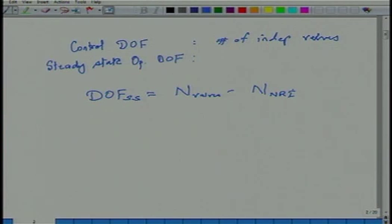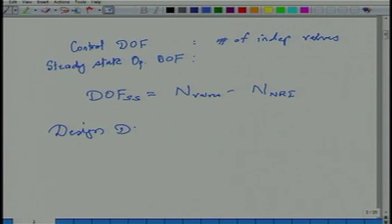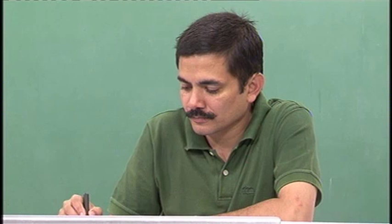This is what we had seen last time. Now I am going to introduce a third degree of freedom which is called design degree of freedom. By the way, the number of valves excludes throughput — that is the most common scenario, because throughput is set either by management or by an upstream process, excluding the feed to the process.